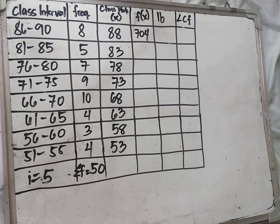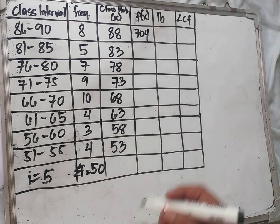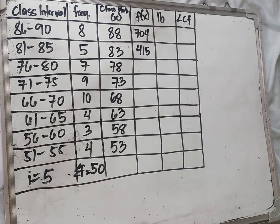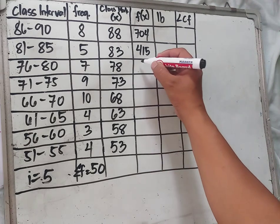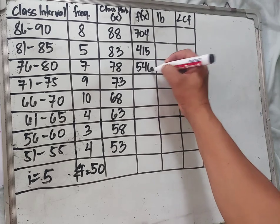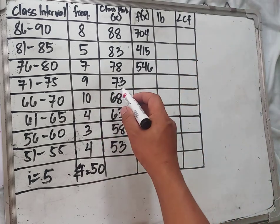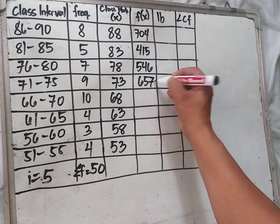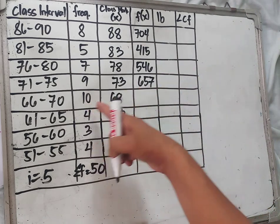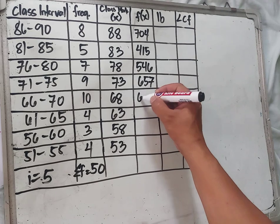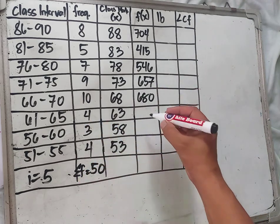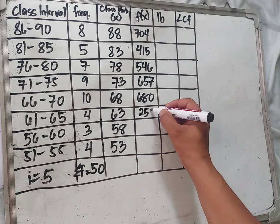Next, 5 times 83 equals 415. Then 7 times 78 equals 546. Then 9 times 73 equals 657. Then 10 times 68 equals 680. Then 4 times 63 equals 252.